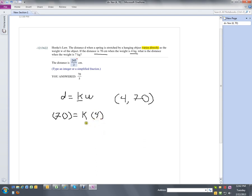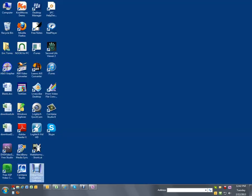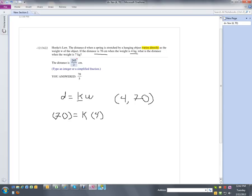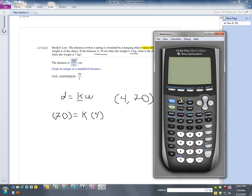Now, to solve for k, I simply need to divide both sides by 4. So let's take a look at this. I'll go ahead and pull out my calculator real quick and bring the question back up. And I'm just going to take 70 divided by 4, and I'm going to leave this as a reduced fraction. So 70 divided by 4 as a reduced fraction is going to be 35 over 2.